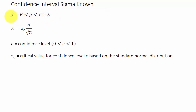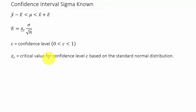Here's the confidence interval formula: X-bar minus E is less than mu, which is less than X-bar plus E. E is Z sub C times sigma divided by the square root of N. C is your confidence level — whether it's a 95% confidence interval or 99% confidence interval. Z sub C is the critical value for the confidence level C, based on the standard normal distribution.